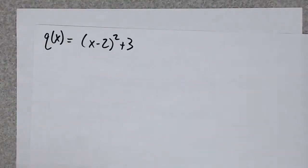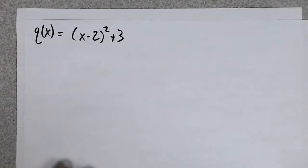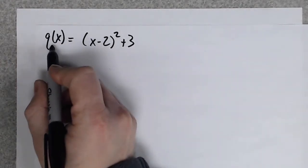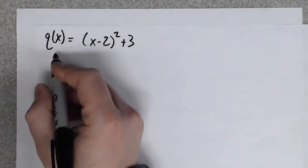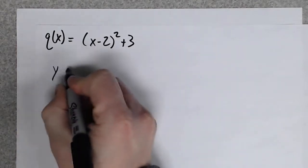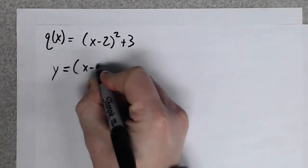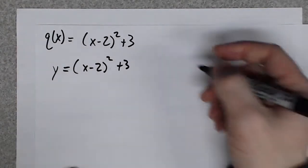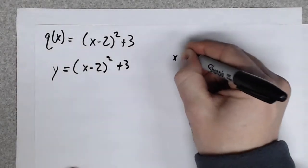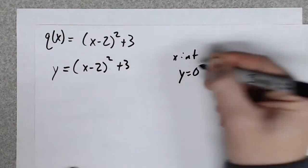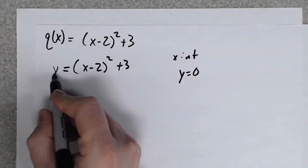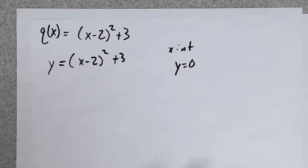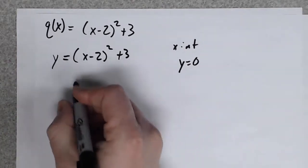The first function we're dealing with here uses function notation — q of x is the same thing as y. Remember to find an x-intercept you plug zero in for y, so that zero replaces q(x), or you could just set the whole thing equal to zero — some people say it like that.